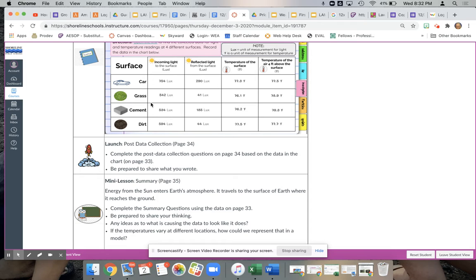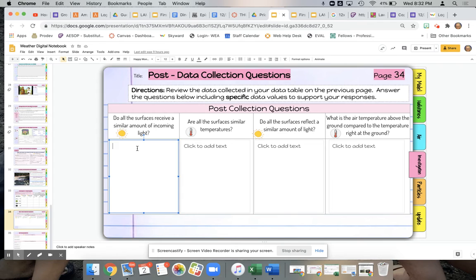It looks as if grass, cement, and dirt are all in the range of 500. But the car is at 754. So to me, that does not seem to be the same.